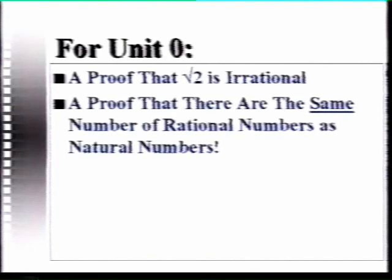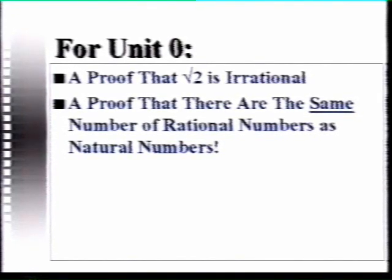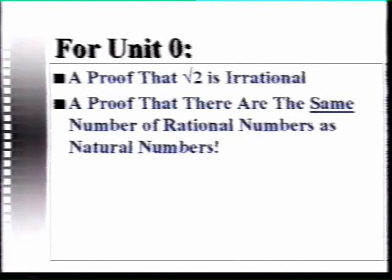Now think about what that means. The natural numbers are the numbers 1, 2, 3, 4, etc. The rational numbers include all of those numbers, but they also include every fraction. So you might suspect intuitively that there are more rational numbers than natural numbers. Unfortunately that's not true — there happen to be exactly the same amount, and I'm about to prove that to you now.